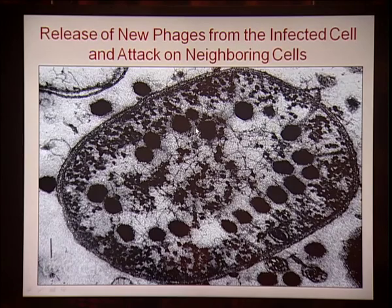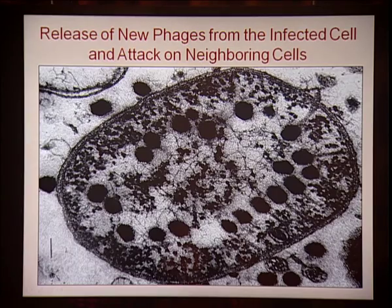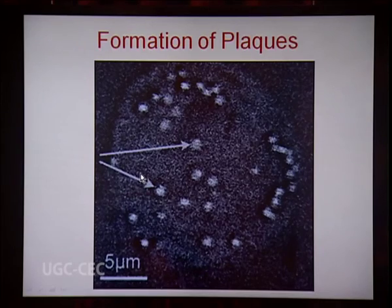In the region where the phages are spreading, no host cells will be present — all cells lyse due to infection by T4. A clear region is produced; these clear areas are called plaques. In a bacterial lawn, we will see clear areas called plaques. The size and shape of plaques depend on the particular bacteriophage.